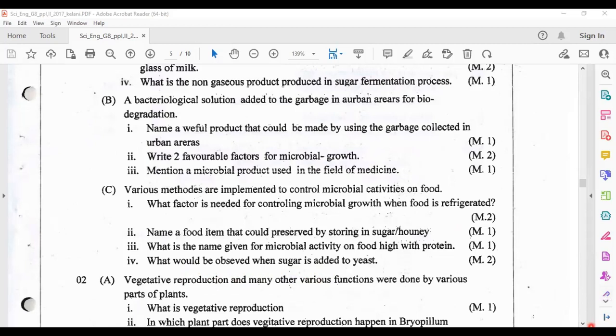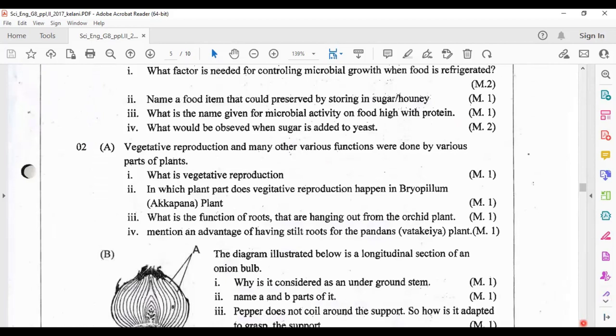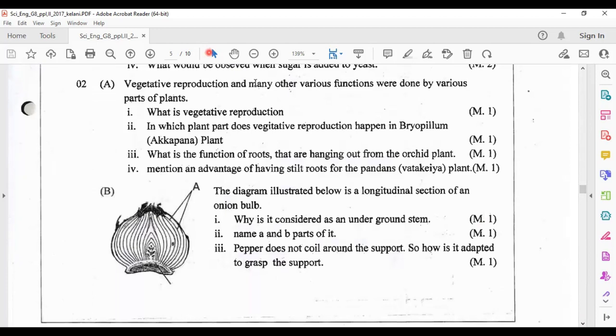Question number two, part A: vegetative reproduction and many other various functions were done by various parts of plants. What is vegetative reproduction? Here I'll write the definition: the growth of a new plant by a fragment of a plant. In which plant part does vegetative reproduction happen in bryophyllum plant? That is the leaves. From the leaves new plants are generating.